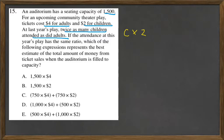If the attendance at this year's play has the same ratio, which of the following expressions represents the best estimate of the total amount of money from ticket sales when the auditorium is filled to capacity?